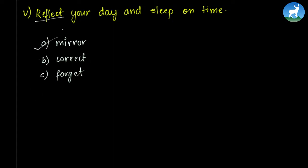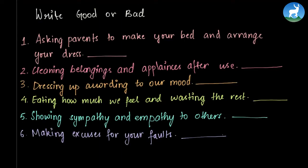Now we will state whether some of the habits are good or bad. So here is the list of sentences and we need to figure it out if these activities are good or bad. Asking parents to make your bed and arrange your dress. So this is being dependent and this is a bad habit. Because you need to make your bed yourself and you need to arrange your dress yourself.